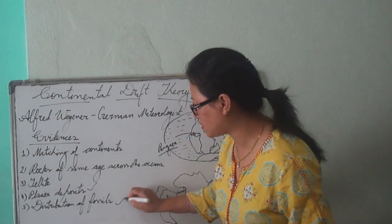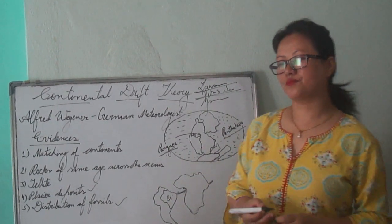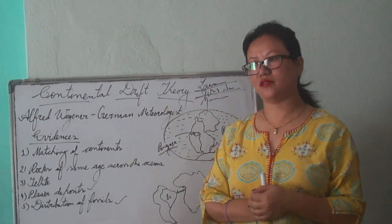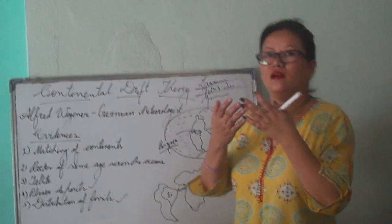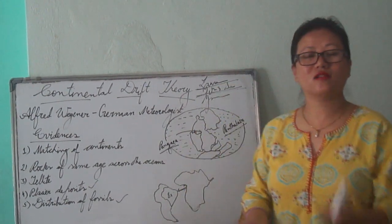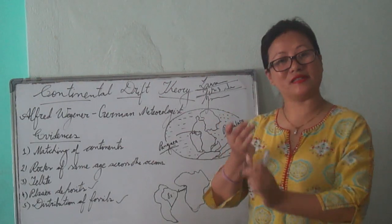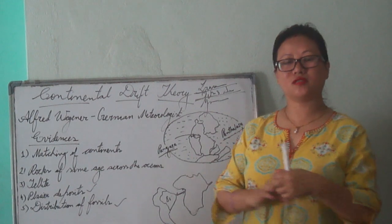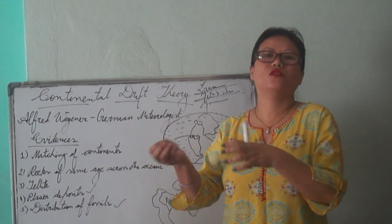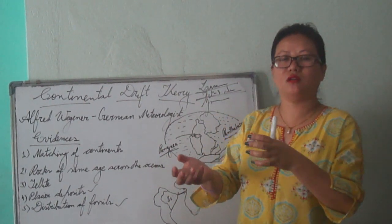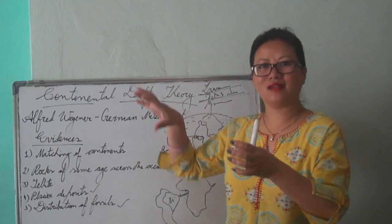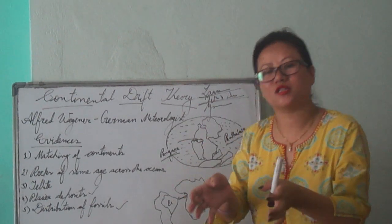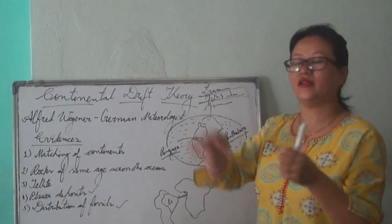The last evidence is the Distribution of Fossils. There was a small creature called the Lemur, believed to have originated in Madagascar. Fossils of the Lemur were found in India, Madagascar, and even in Africa. Since the creature was too small, it was not possible for it to travel to all these areas on its own. This proves that all the land masses were once together, which is why the fossils are found in different areas.